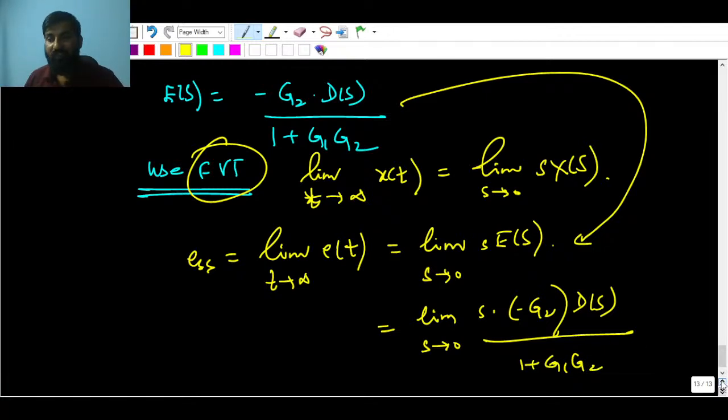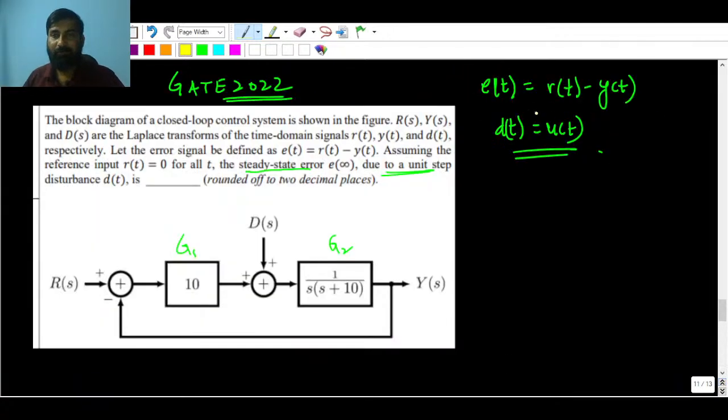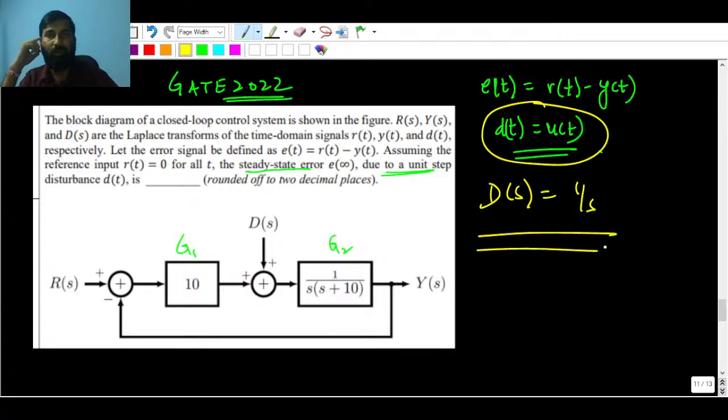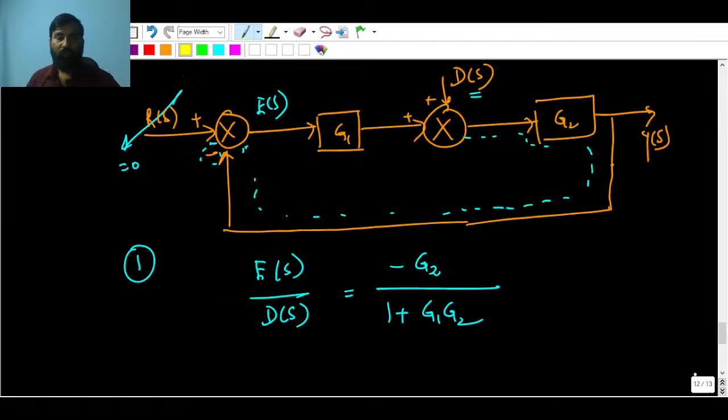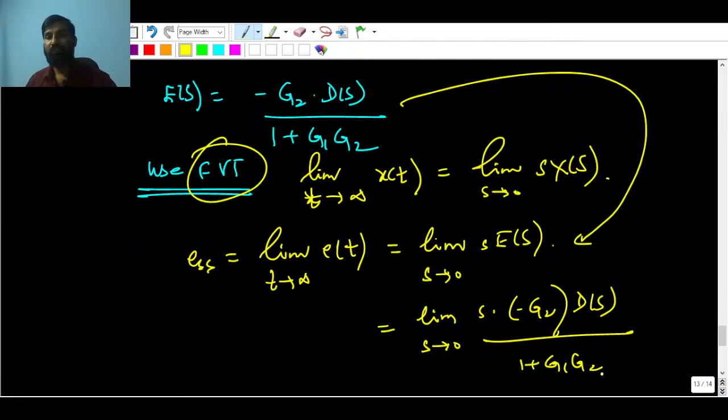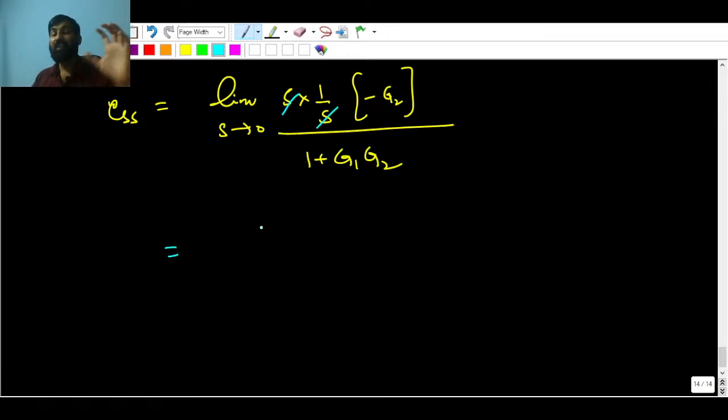Now they have given in the question you have to find the steady state error because of unit step, because of this guy. What is the Laplace transform of unit step? That is 1/s. You have to always keep this in mind. So let me go ahead. Keep this in this equation, in this expression. So this is e_ss = limit s tending to 0, s·D(s), D(s) is 1/s, and keep -G2/(1 + G1·G2). You can cancel these two guys, s and s, no problem. Moving forward, keep all the G1 and G2 in this. Substitute all, or you can say plug here G1 and G2.